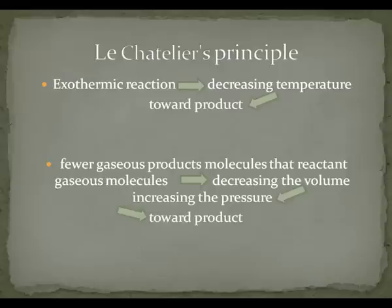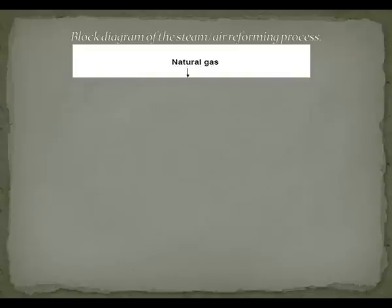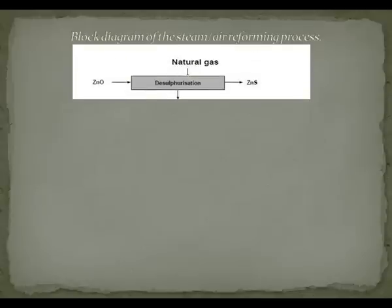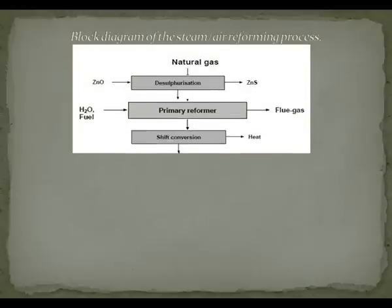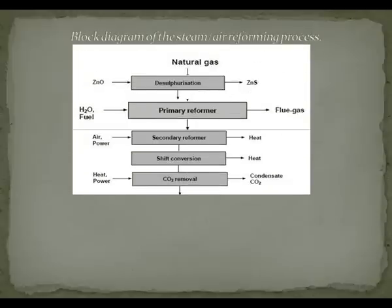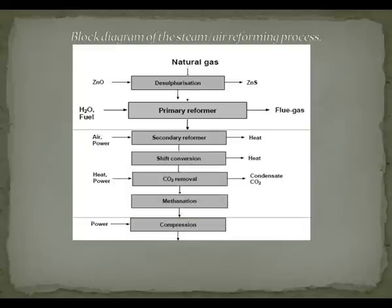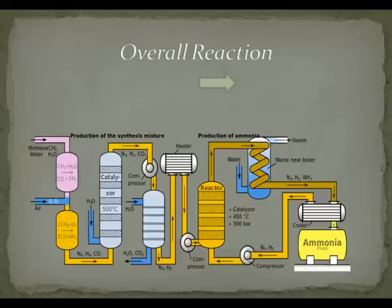Now I will start explaining the ammonia production process. Starting with natural gas coming through, the second part is desulfurization, going with primary reformer, secondary reformer, shift conversion, CO2 removal, methanation, compression, and finally ammonia synthesis.